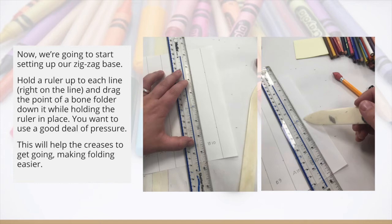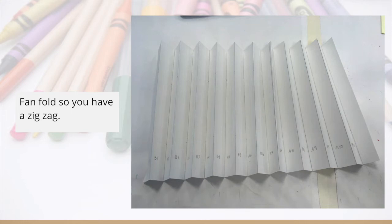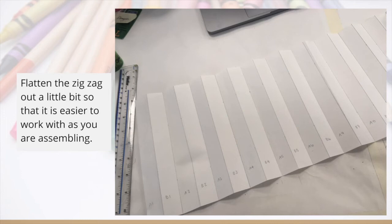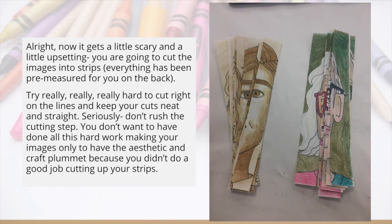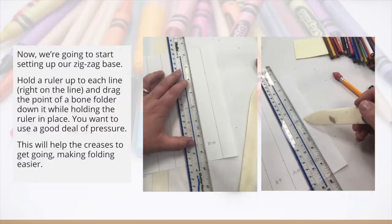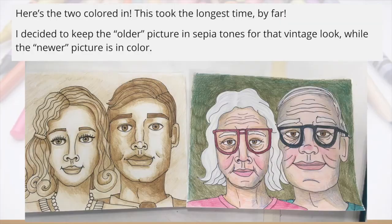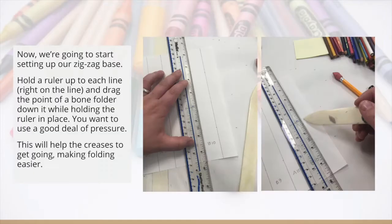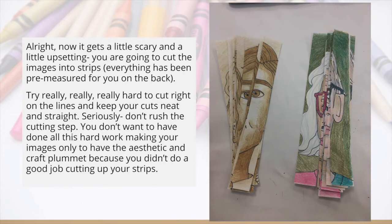Notice how everything is labeled before she started folding. Flatten the zigzag out a little bit so it's easier to work on as you start to assemble. Now here's the scary part — you are going to be cutting those original images. On the back side of the papers are already the lines and the labels: 1A, 1B, etc. You have to cut right on the lines. The cuts need to be neat and straight. Please do not rush this step, because how they're cut and the craftsmanship involved is really important in order to make sure the agamograph actually looks how you want it to look.